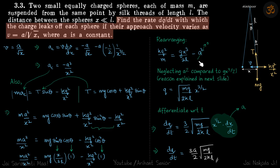Why we are neglecting we will see in the next slide. For now, just understand this a square is very small compared to this. This equation becomes q is equal to root of mg by 2kl x power 3 by 2.